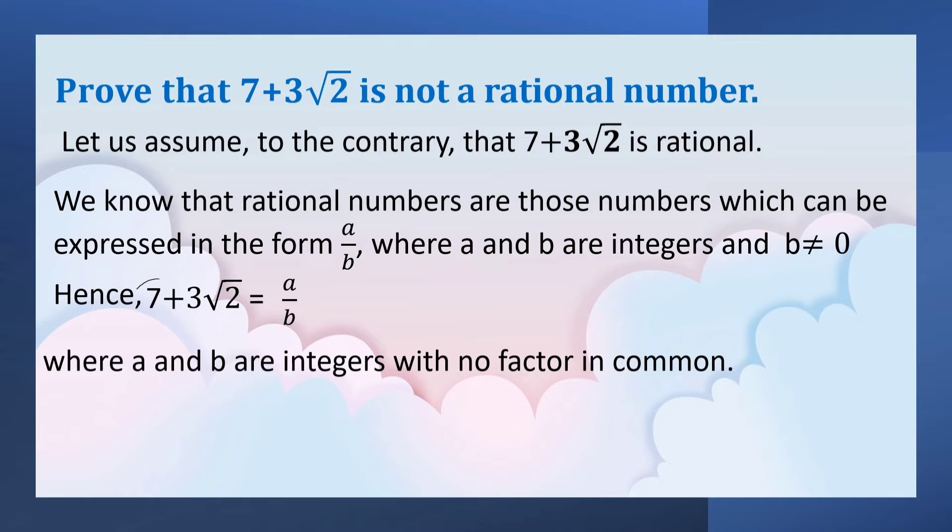Now let us move 7 to RHS. So, 3 root 2 is equal to a by b minus 7.